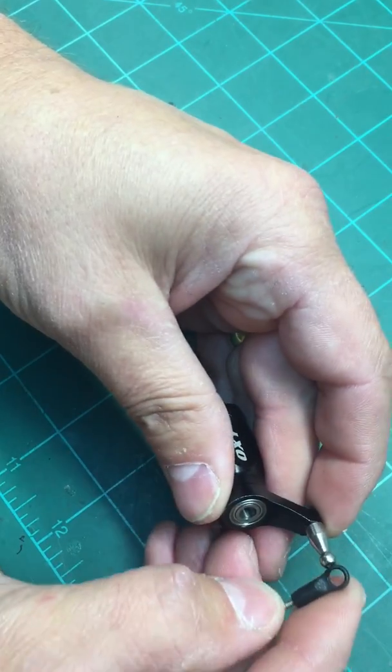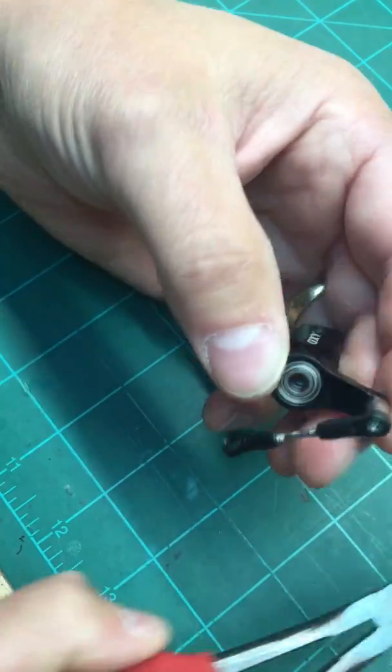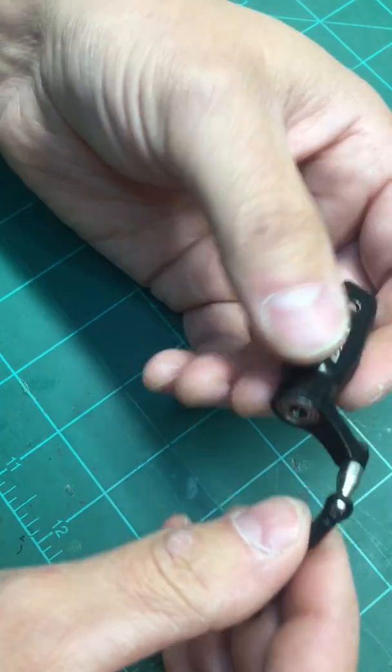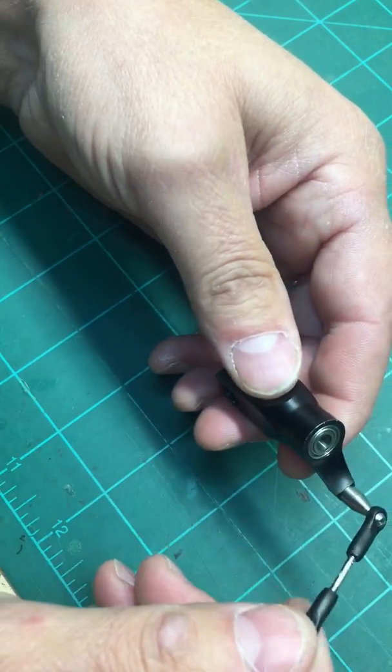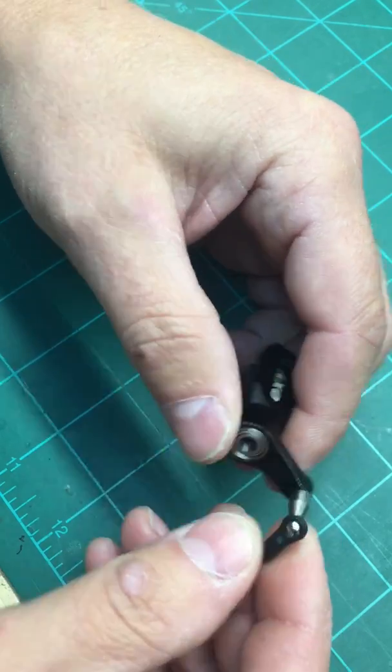And then when you go and snap it back on, obviously at that point it's going to be tight and then you start over again with your pliers and get it so it's perfect again. You know, that would be like an extreme situation.